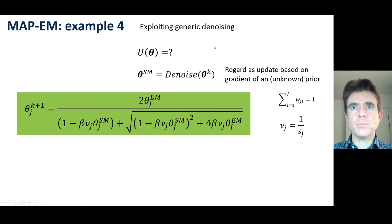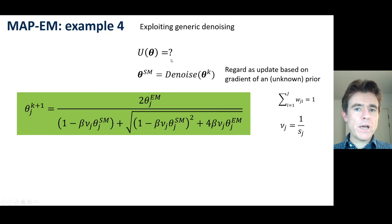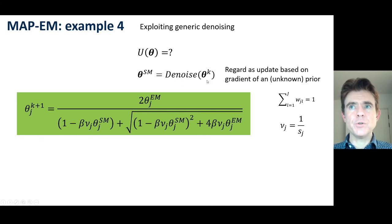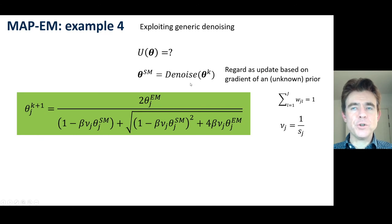Although for a generic denoiser we don't know how to define the energy function u. Instead, we define what we would like the update to look like: take your current estimate theta_k, apply your denoising operator, and get a smoothed update.